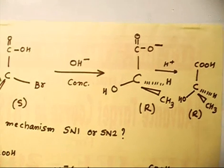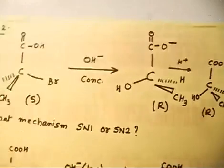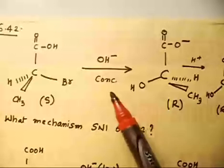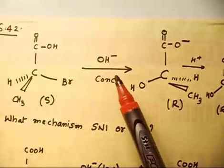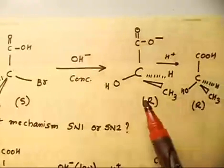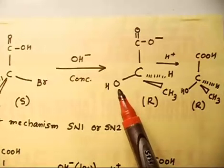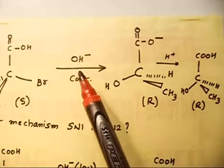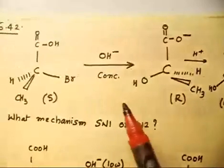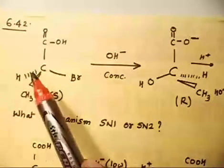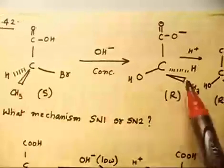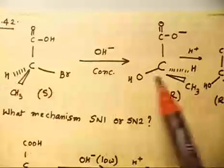Let us go to the solution part. Initially we have this compound treated with excess OH⁻, that is concentrated OH⁻. If you see the product, what is happening: Br has gone, and now OH is attached. In basic medium, COOH will convert to COO⁻. So this OH⁻ is attacking from the back face, and that is why these two groups are going to the away face.